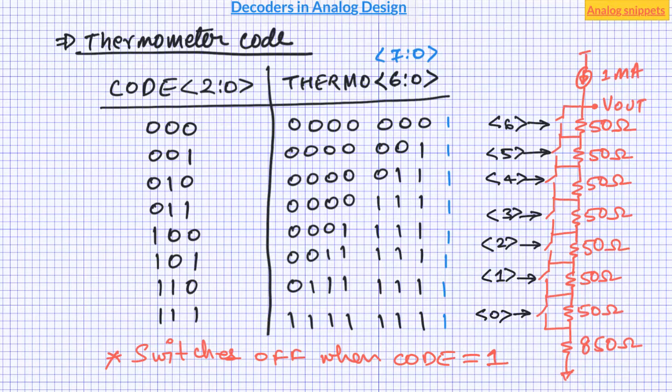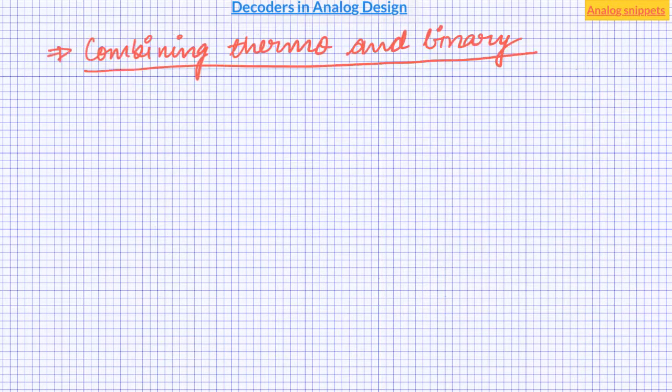But on the flip side as number of codes increase the number of required switches and the digital logic increases exponentially. But fortunately we can combine thermometer code and binary code to get best of the both worlds. Recall that binary code starts to become non-monotonic when number of bits in the code become large. So we can use binary coding for the LSBs and MSBs can be implemented using thermocodes. Exact calculation can be done if the uncertainty in the component is known.